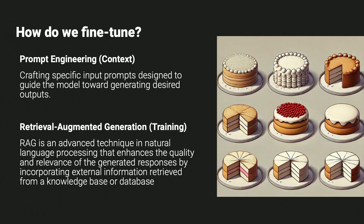There are two main ways we're going to do this. The first is through prompt engineering — crafting a specific input prompt designed to guide the model towards generating assisted outputs. We're going to tell it how it must act, how it must respond, what it should say, what it shouldn't say, and give it some general fine tuning.